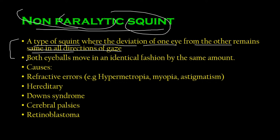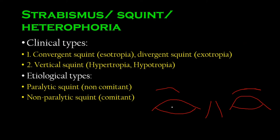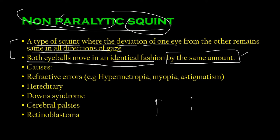Another key point: in non-paralytic squint, both eyeballs move in an identical fashion by the same amount. So if one eye moves up by 10 centimeters, the squinted eye will also move up by 10 centimeters. Because there is a squint, the alignment remains off — there is a constant squint — but both eyeballs always move identically by the same amount. I cannot stress this enough.